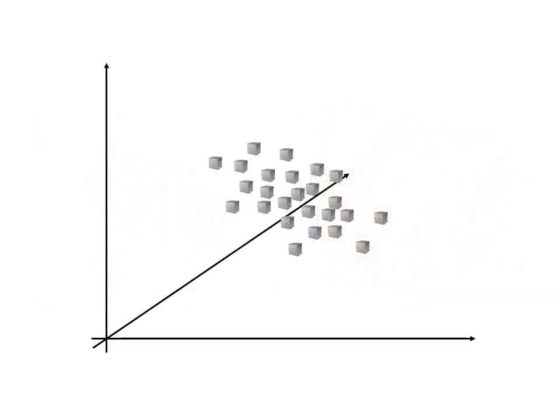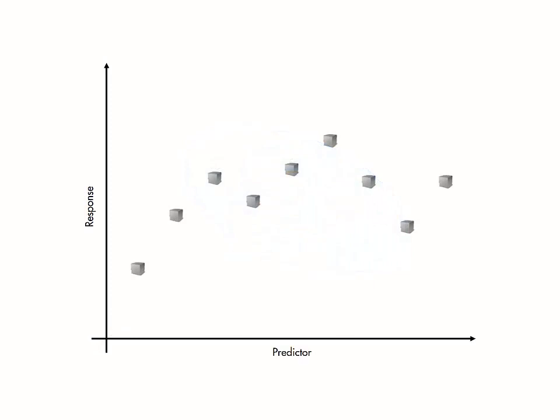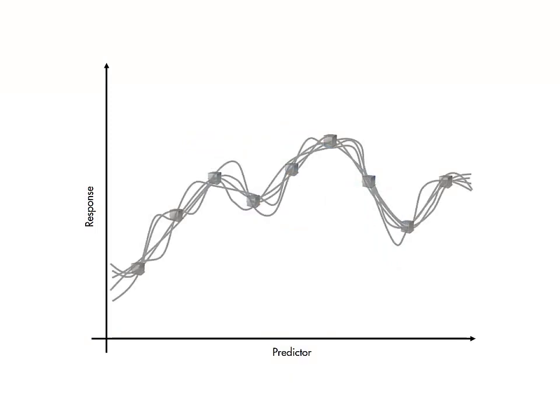Given a set of data points, we can fit a probability distribution to them by choosing the distribution parameters to match the properties of the distribution to the properties of the data. Similarly, given a set of function values, we can fit a probability distribution of functions that closely match the given function values.